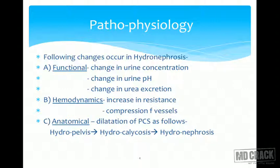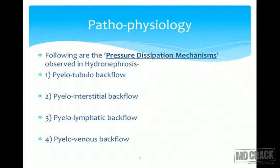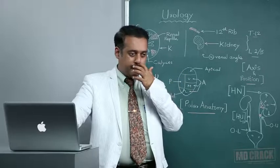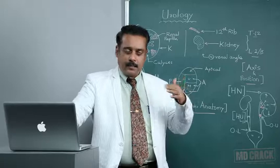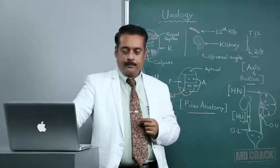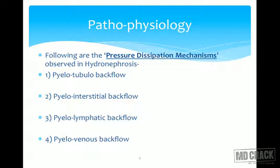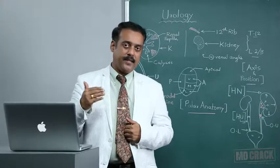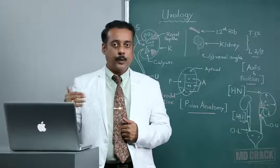Initially there is hydropelvis, followed by hydrocalycosis, followed by hydronephrosis. A pressure dissipation mechanism is also observed. Four main phenomena are seen: first is pyelotubular backflow into the glomerular apparatus due to increased pressure and resistance; this further progresses to pyelo-interstitial backflow, then to pyelo-lymphatic backflow, and lastly pyelo-venous backflow. All these different phases of backflow eventually lead to hydronephrosis.